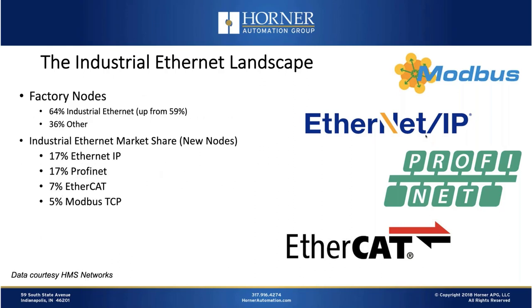Looking at market share — for every node, a factory automation device that is network connected, 64% are currently based on industrial Ethernet. That means 36% are other. Dividing up that 64%, 17% is Ethernet IP, an equal share is Profinet, 7% with EtherCAT, and 5% with Modbus TCP. That's for new nodes and new installations, not necessarily historical installations, so historical market share numbers are a little different.